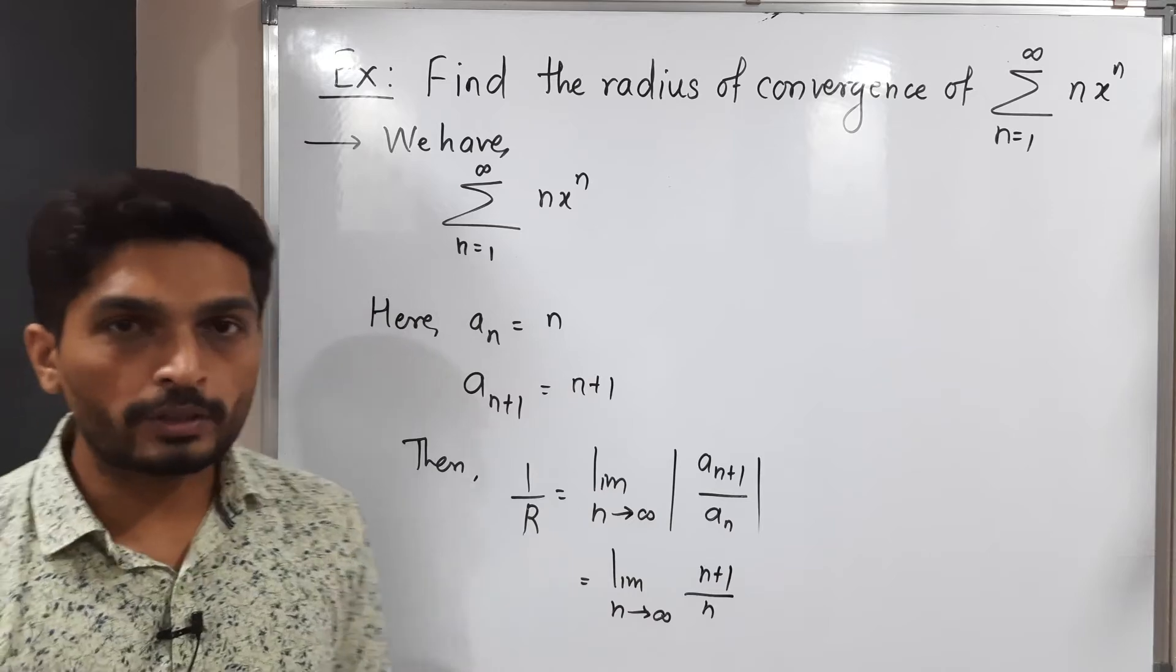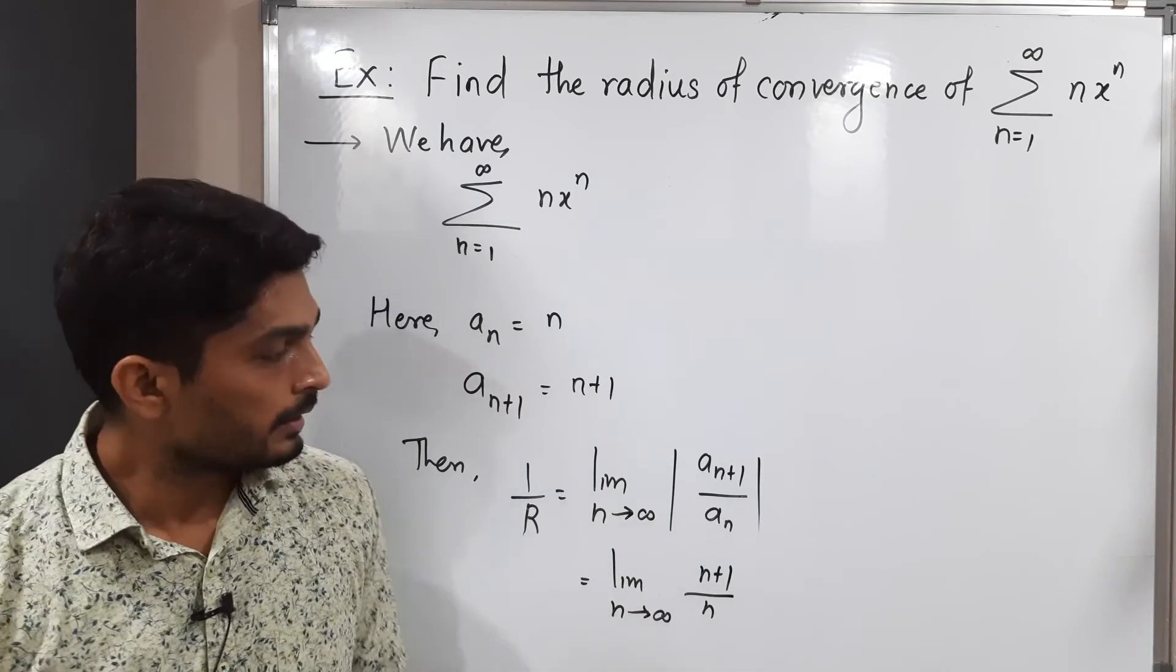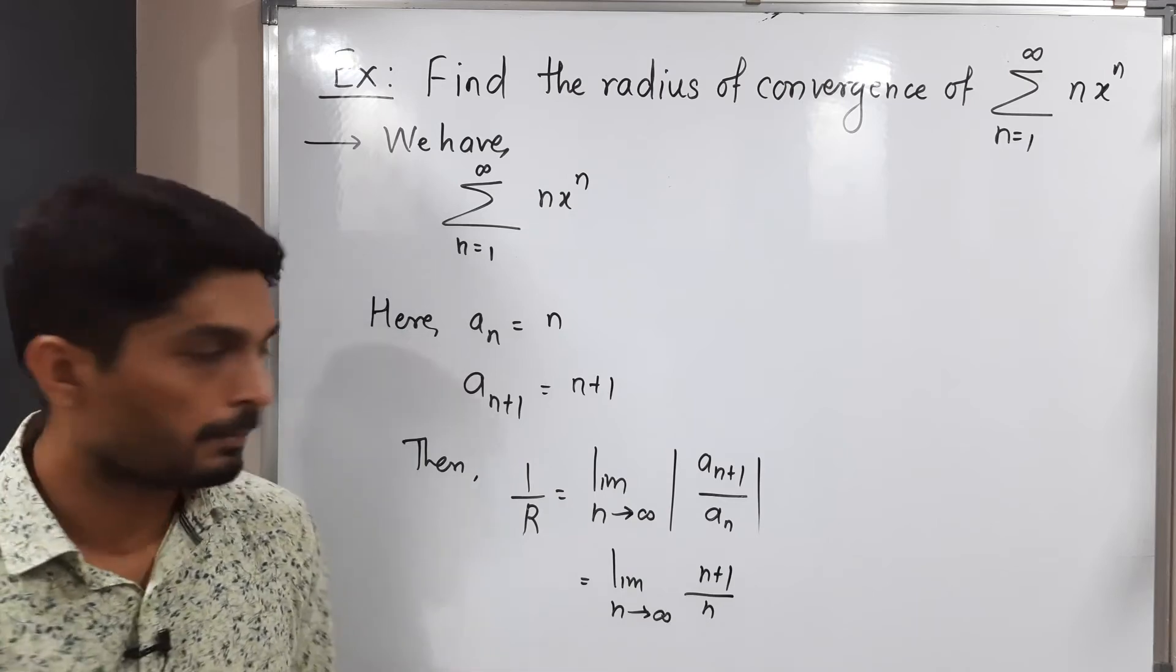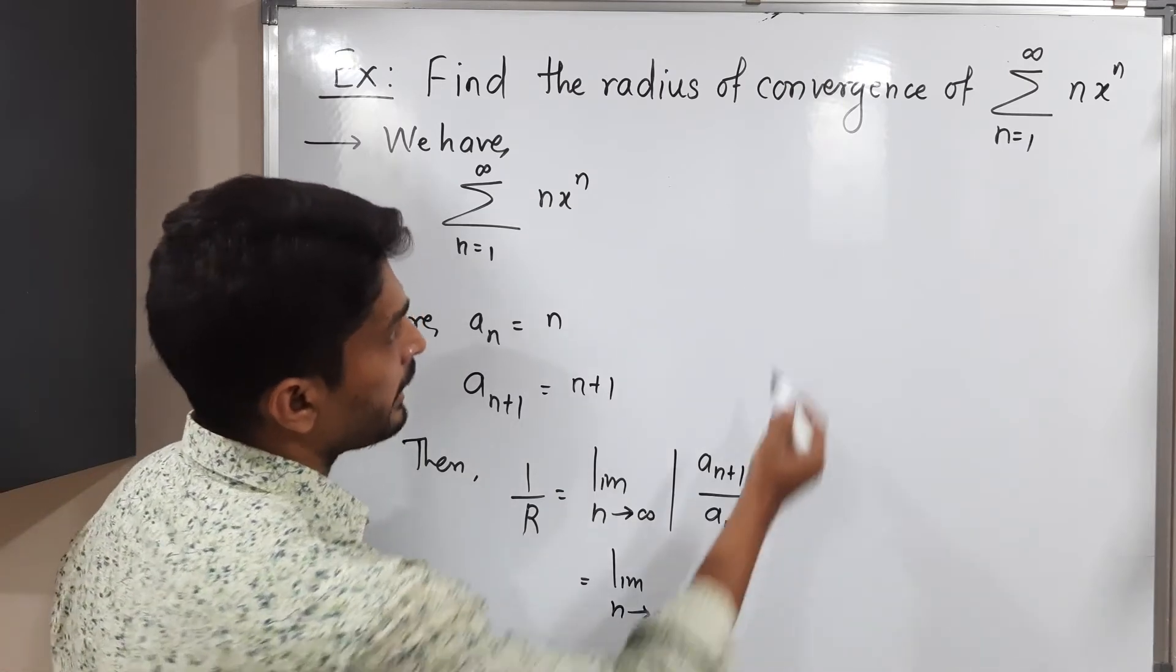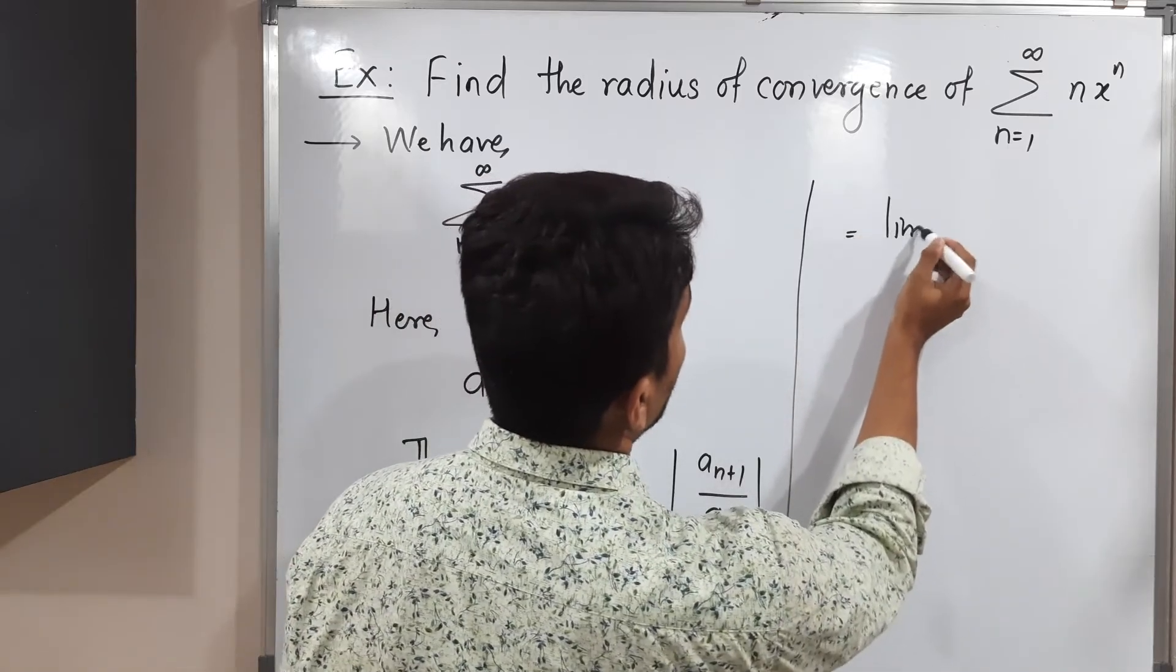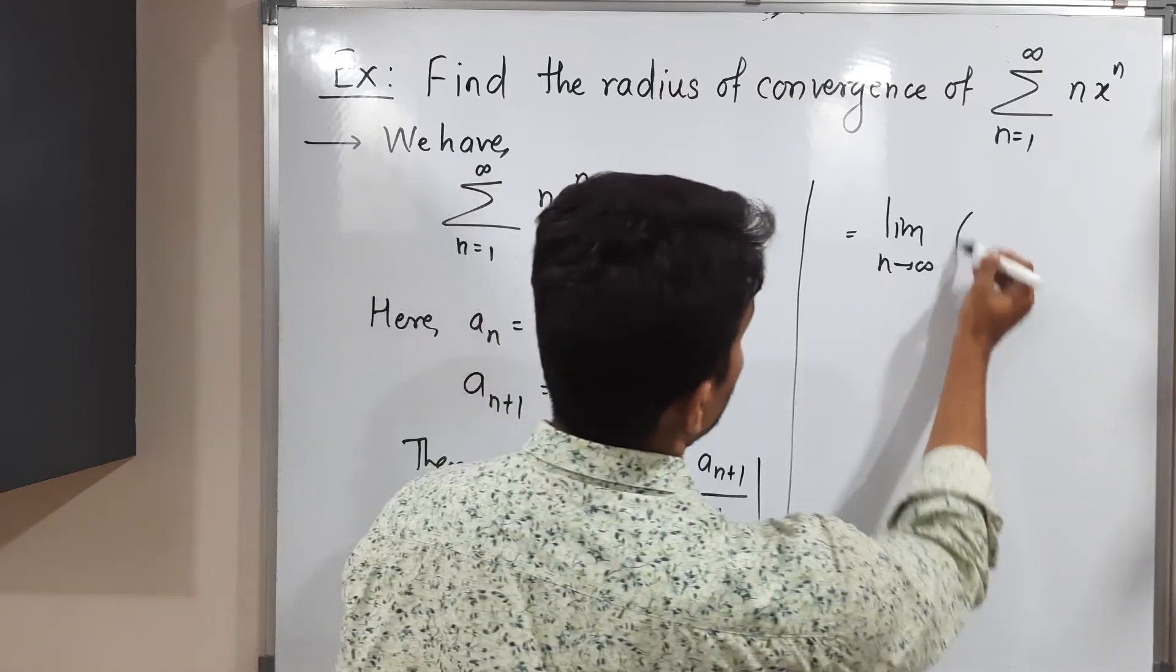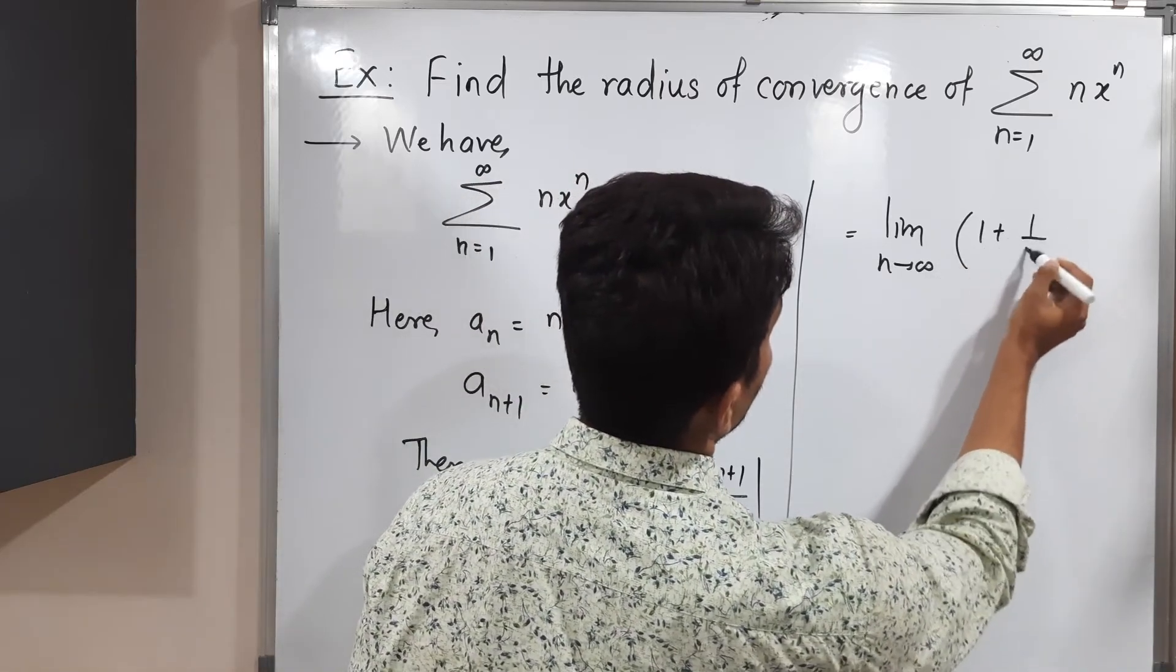I didn't write mod there since mod is not required, these numbers are positive real numbers. So let us divide the numerator by n separately. So we will have limit as n tends to infinity. So n will get cancelled if you divide separately: 1 + 1/n.